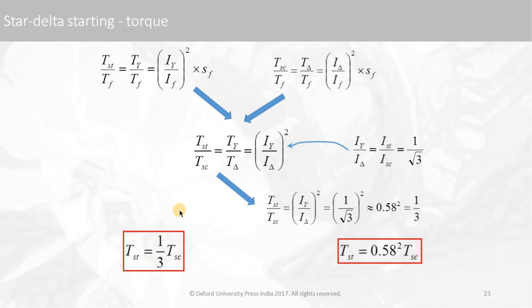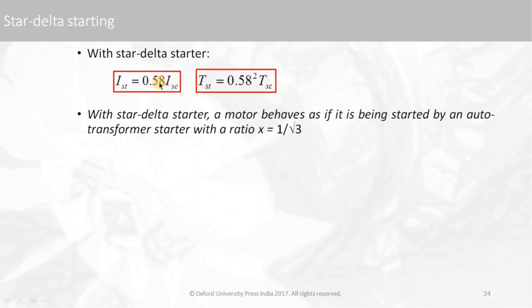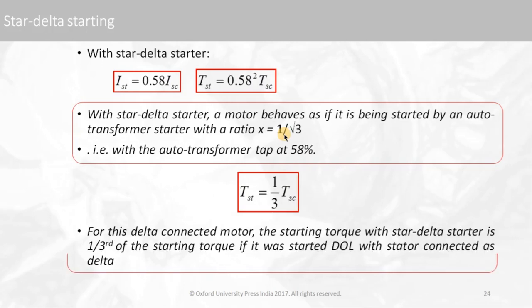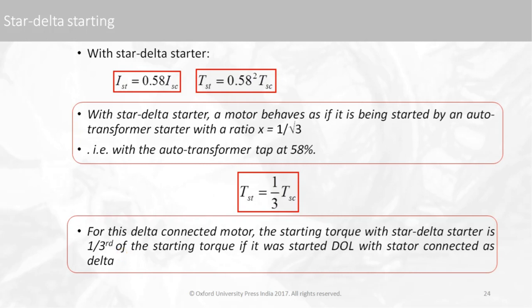This is all about the star-delta starter and auto transformer starter. The current is reduced to 0.58 of the short circuit current and the torque is one-third (0.58 squared). The star-delta starter behaves as if the motor is started by an auto transformer with a tapping ratio of 1/√3, which is about 58%. For a delta-connected motor, the starting torque with star-delta starting is one-third of the starting torque if started directly as delta. This concludes today's class on starting of squirrel cage induction motors. In the next class we will start speed control of three-phase induction motors.